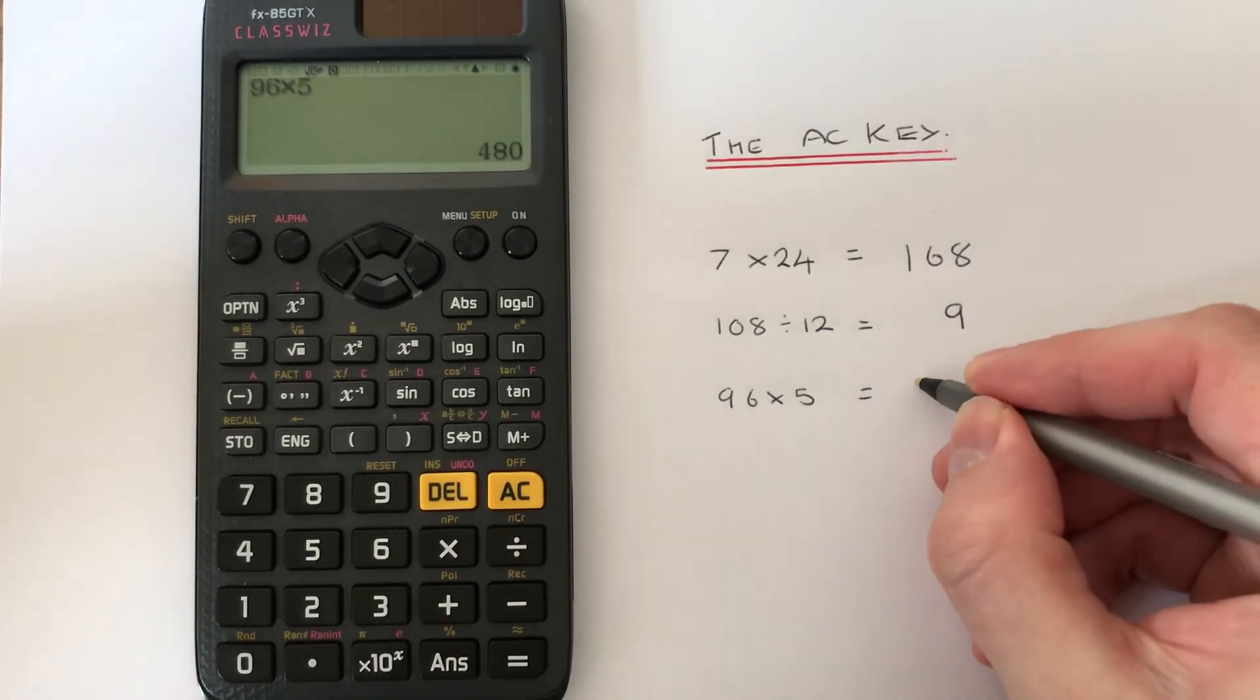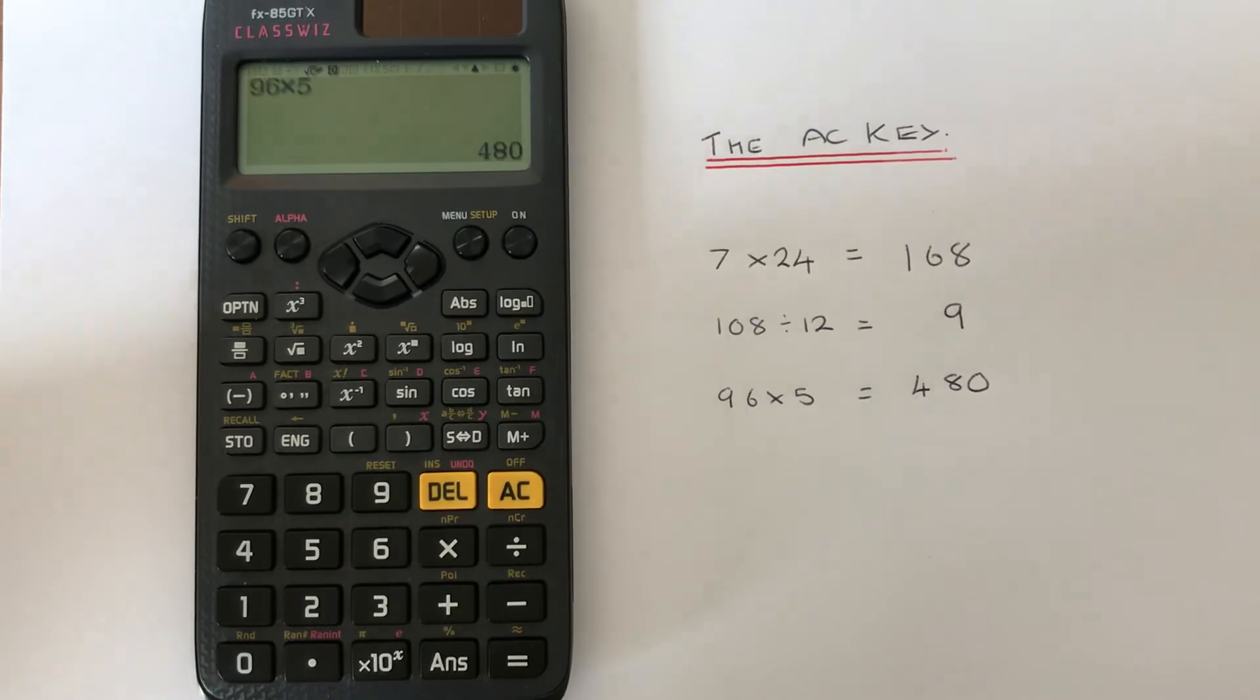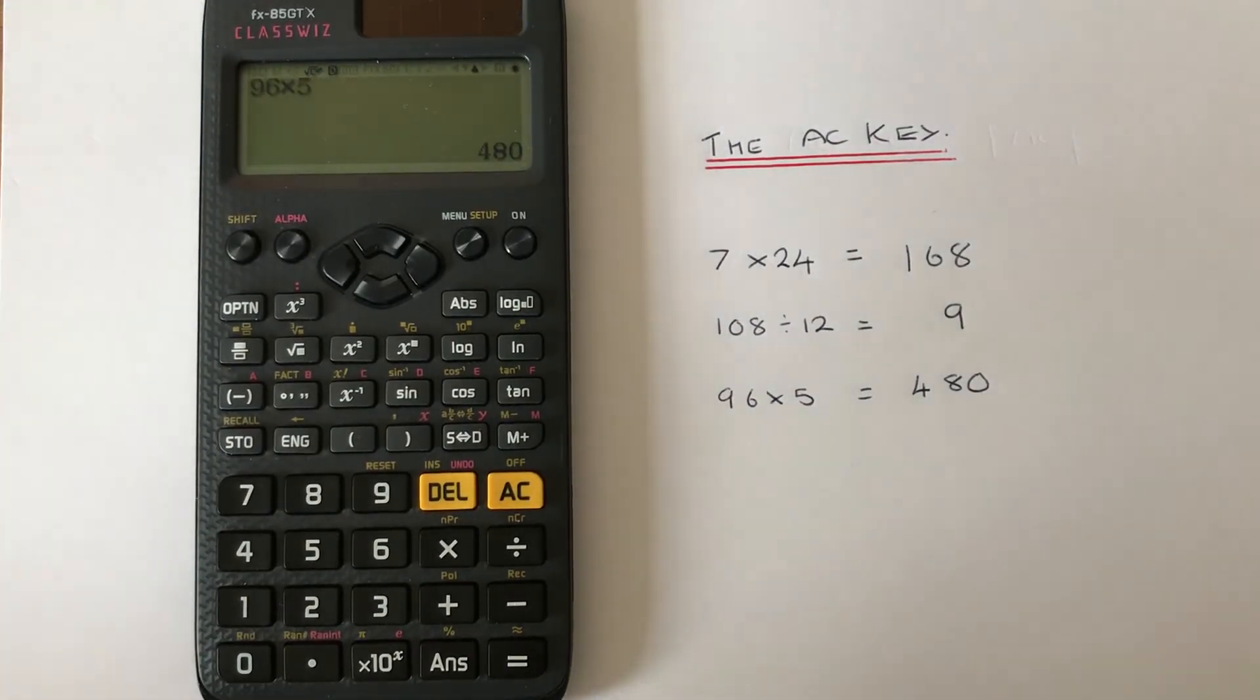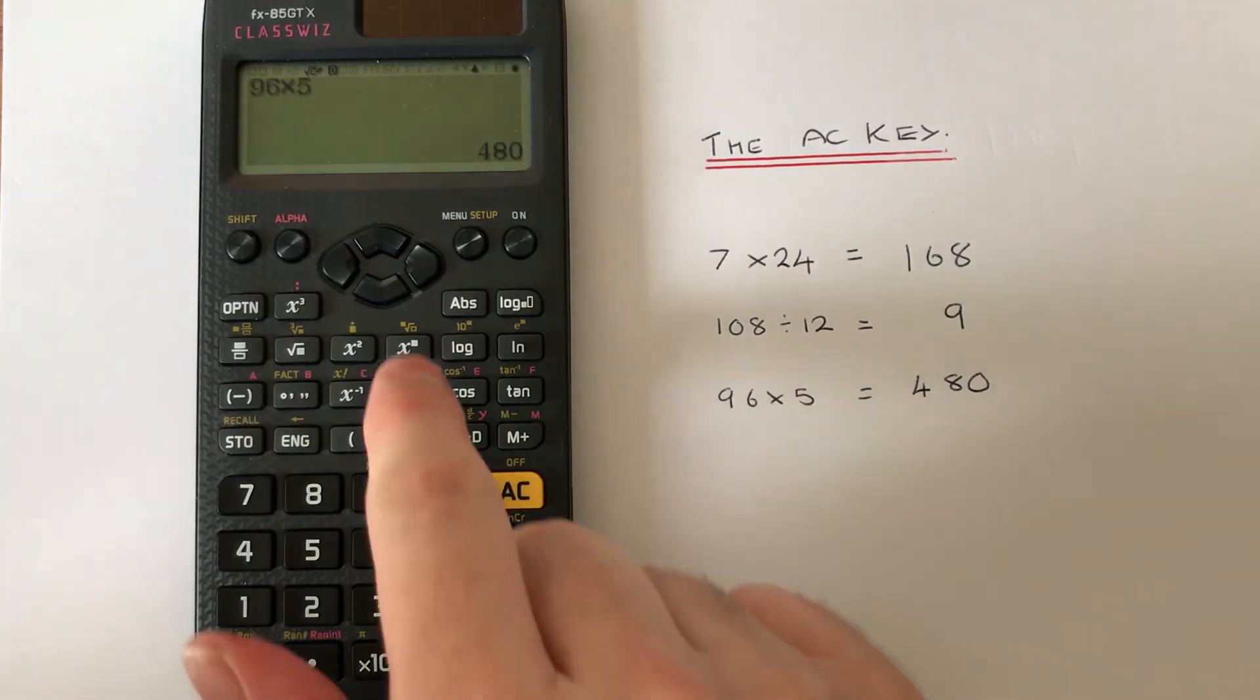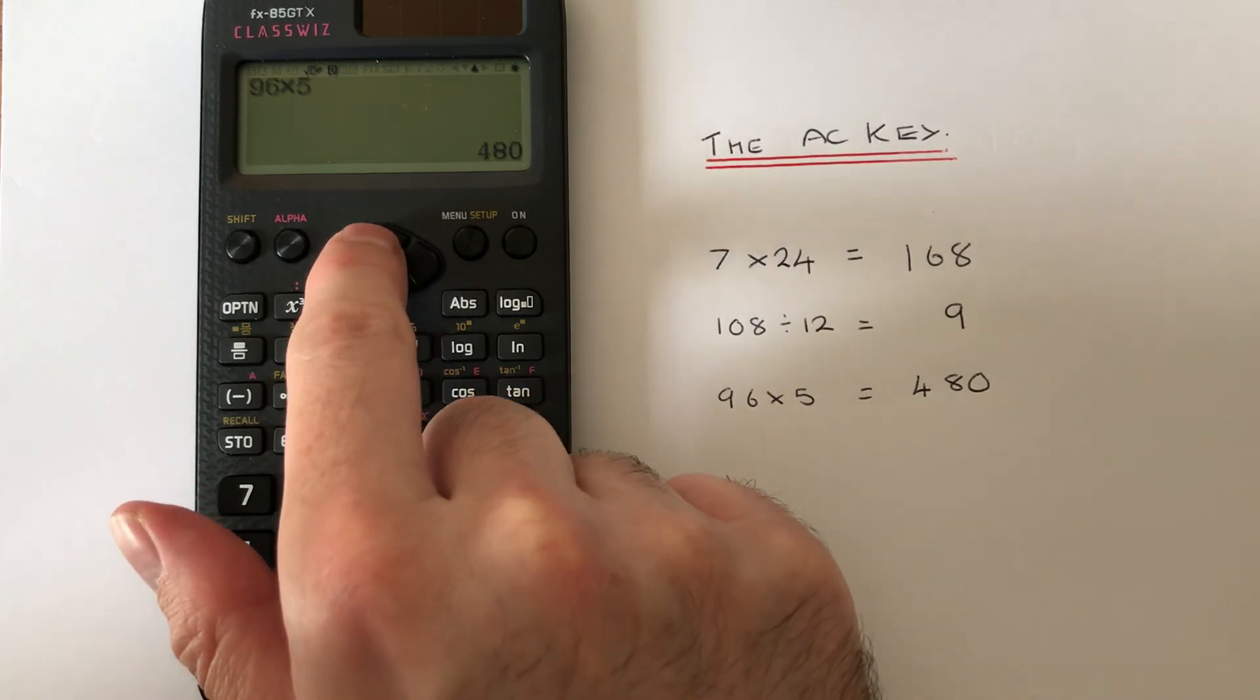Let's say we forgot to write down the first answer and we need to go back to that first calculation. To do this, we just need to press the upwards arrow key.